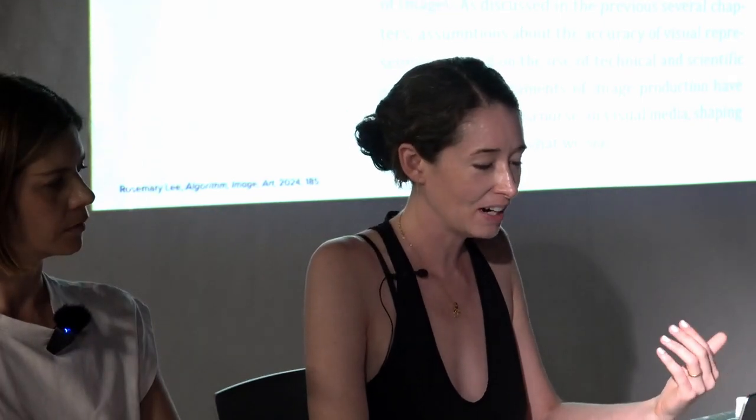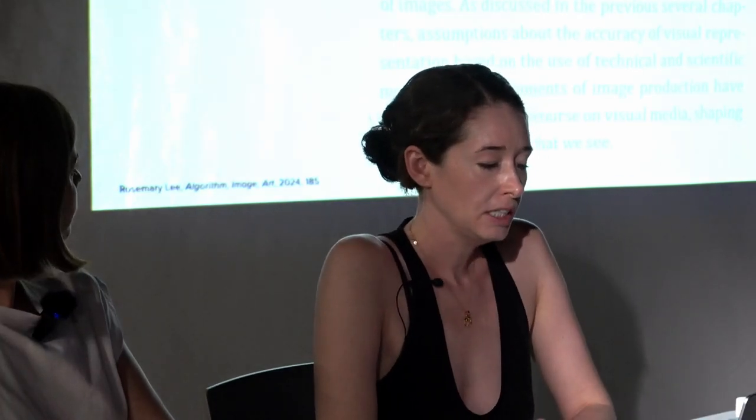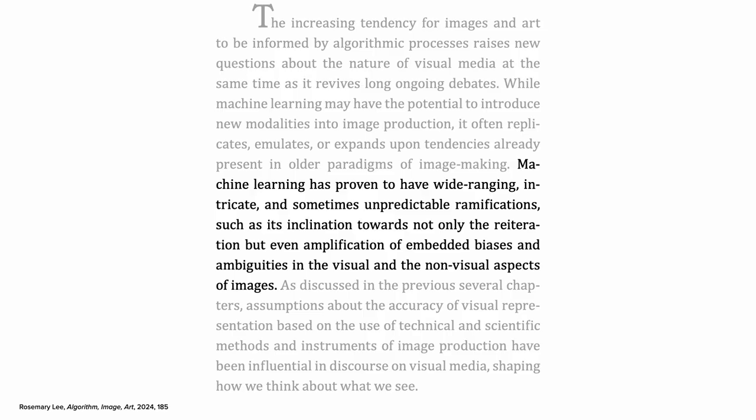To quote myself from the book: 'While machine learning may have the potential to introduce new modalities into image production, it often replicates, emulates, or expands upon tendencies already present in older paradigms of image making. Machine learning has proven to have wide-ranging, intricate, and sometimes unpredictable ramifications, such as its inclination towards not only the reiteration but even amplification of embedded biases and ambiguities in the visual and non-visual aspects of images.'